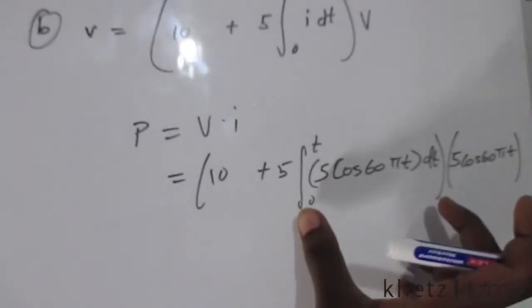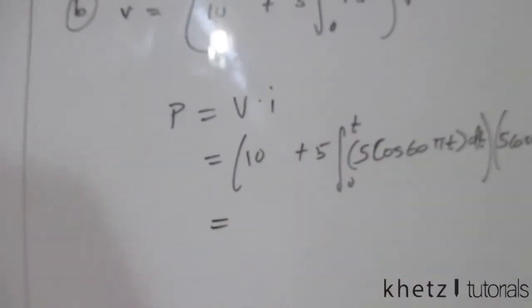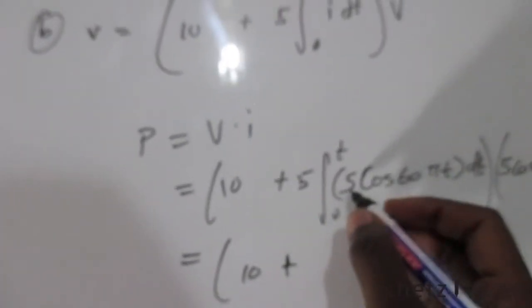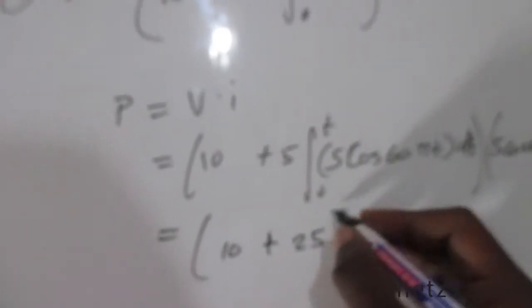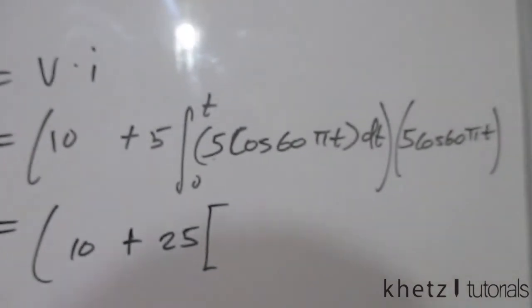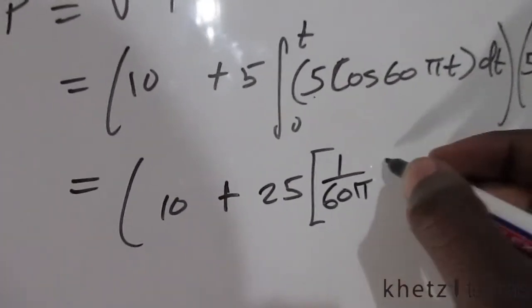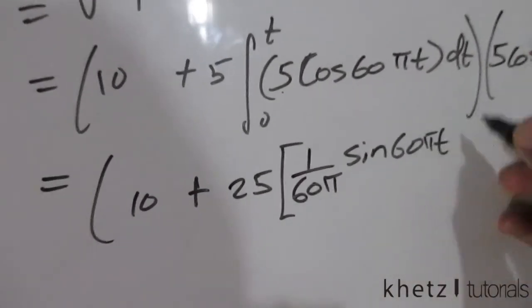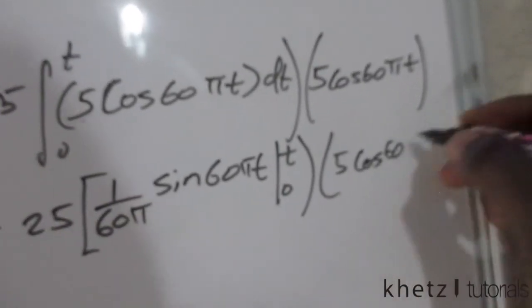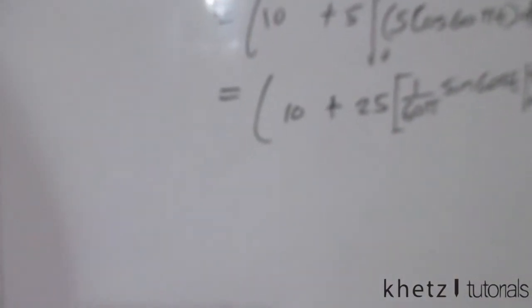Now let's first solve this part. Then I'm going to multiply everything. So for this part we have 10 remains the same. And we can take out the 5. So 5 times 5 which is 25, multiply by the integral. For this which is inside the brackets, which is going to be from time 0 to time t, multiply by that. Now it's a matter of multiplying through.